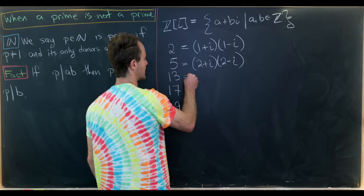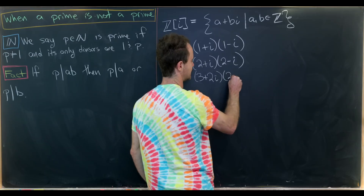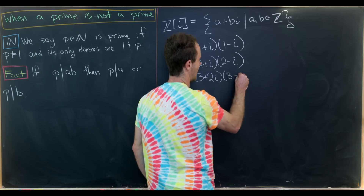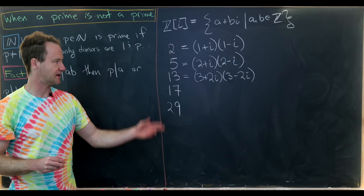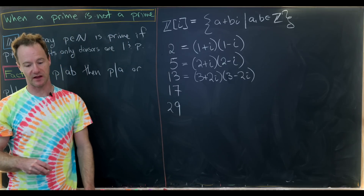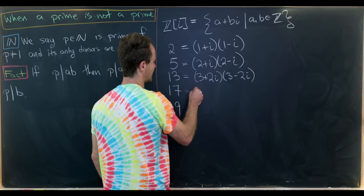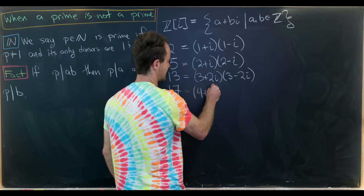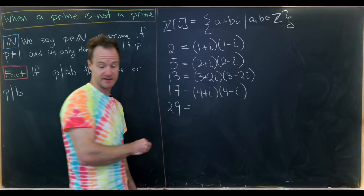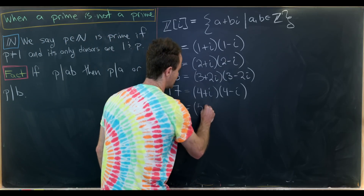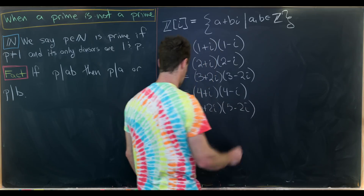We can keep going: 13 equals (3 + 2i)(3 − 2i), since 9 plus 4 is 13. So 13 is not prime in the Gaussian integer world. Continuing, 17 equals (4 + i)(4 − i), and 29 equals (5 + 2i)(5 − 2i).